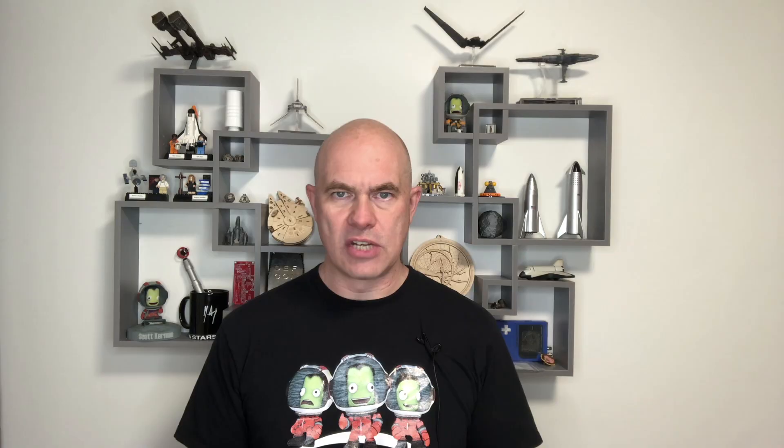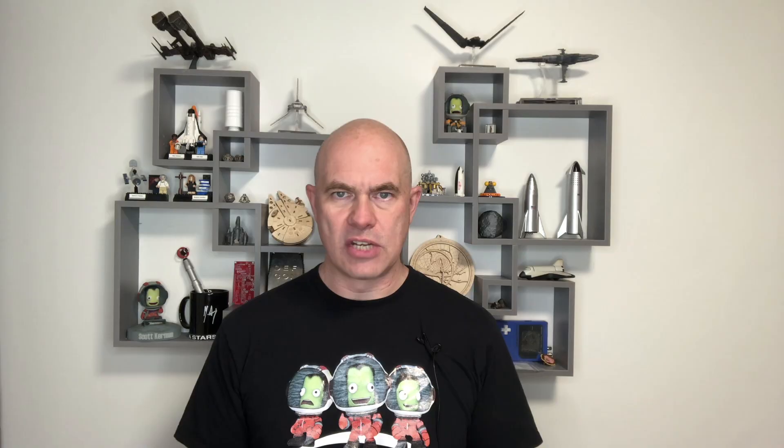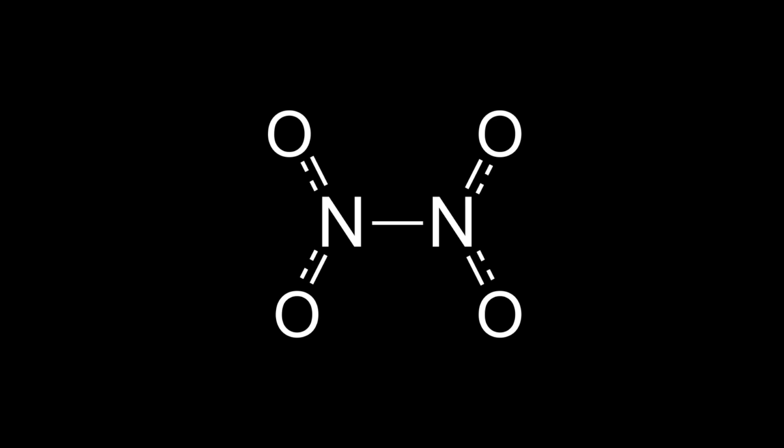The most common form of hypergolic oxidizer is dinitrogen tetroxide. Most people who actually use this stuff choose to save a syllable and say nitrogen tetroxide instead, even though that's not technically correct. The molecule consists of two nitro groups — that is, a nitrogen atom and a pair of oxygen atoms — and these two groups are joined by a single weak bond between the nitrogens.